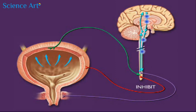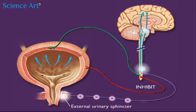Impulses carried via somatic motor neurons keep the external urinary sphincter contracted, which also prevents urination.